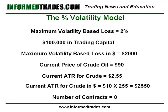Since we've specified that the maximum amount we're willing to risk of our trading capital is $2,000, and the current ATR for one contract of crude is $2,550, the number of contracts we can trade in this example is zero — because the dollar-based per contract average true range is greater than what we need to stay within our 2% volatility-based loss limit.